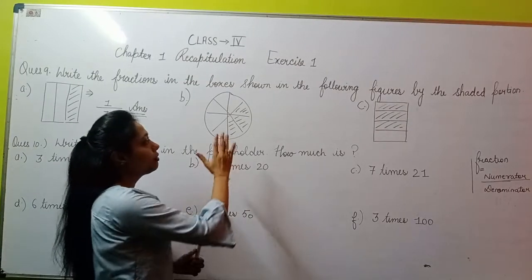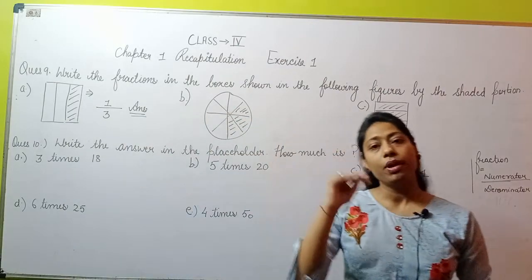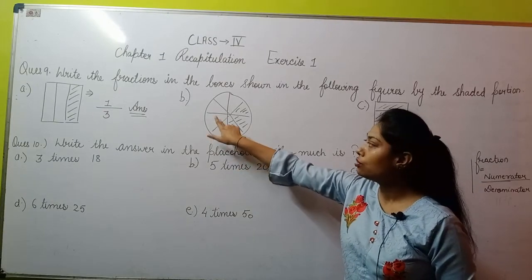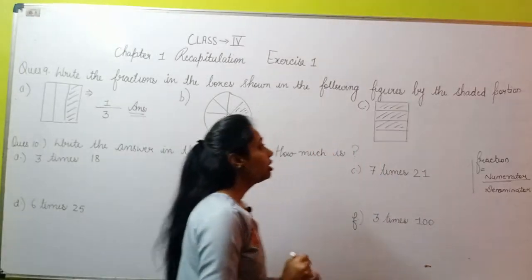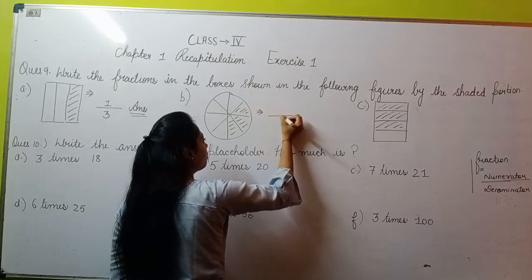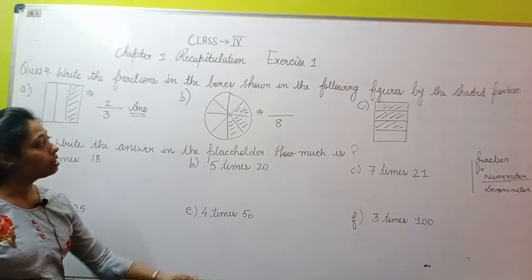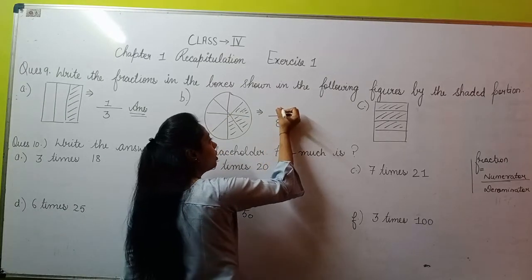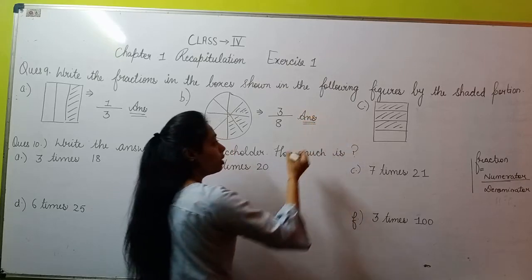Similarly, we'll do the second part. In the second part you have a circle, also divided into different parts. First count how many total parts: one, two, three, four, five, six, seven, and eight parts. That means my fraction's denominator will be 8. Now out of these eight, we have to see how many parts are shaded: one, two, and three. Three parts are shaded. So 3/8 is my fraction and this is my answer.